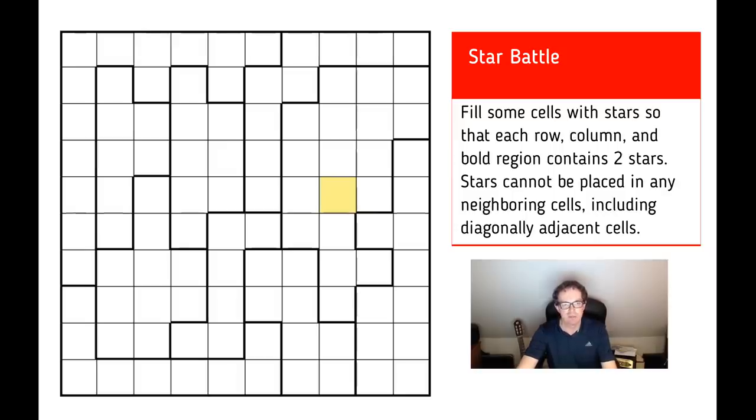Now, how do we start Star Battle Puzzles? Well, there are a couple of tips I'm going to give you. Now, derived from what we said before about no star can be next to another star, there's something very simple that we can say about 2x2 boxes. How many stars can we place in this 2x2 box? It should be very obvious that we can only place one star in any 2x2 set of cells. But that simple fact can lead to some simple deductions.